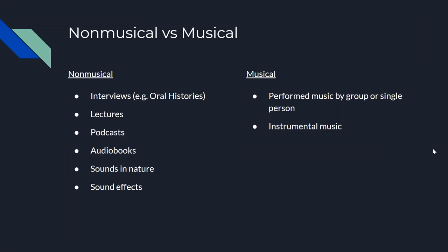Sound recordings are split into two groups for cataloging: non-musical sound recordings and musical sound recordings. Non-musical sound recordings are considered recordings of non-musical sounds on any media, including online resources. This includes such things as interviews, lectures, podcasts, and audiobooks. It can even include sounds in nature and sound effects.